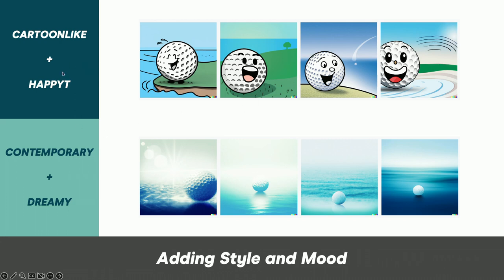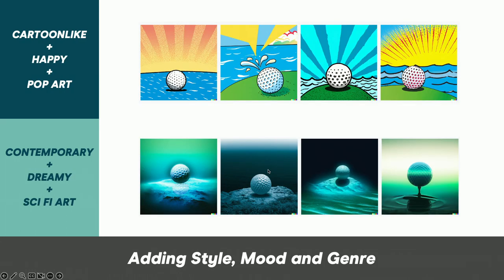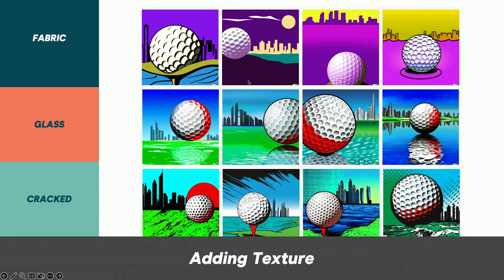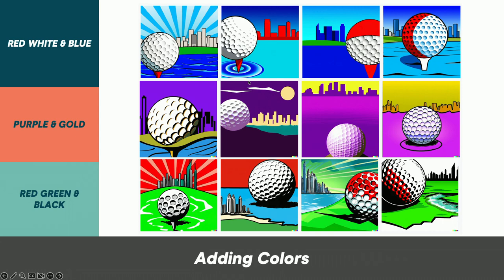Look at the happy faces over here because my golf ball is now very happy, and down here my golf ball is dreamy. We can force different effects by combining style, mood, and genre. Then you get into perspectives — you can force things through perspectives, you can add texture, you can add location, you can add colors along with location.